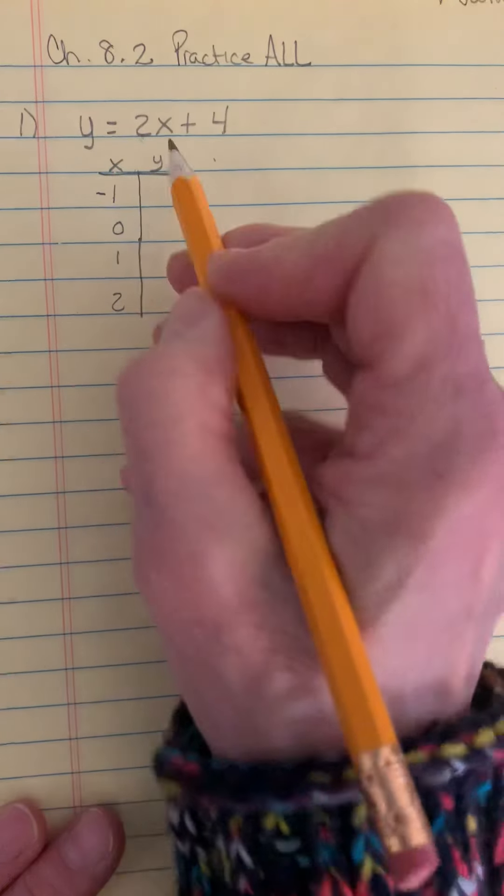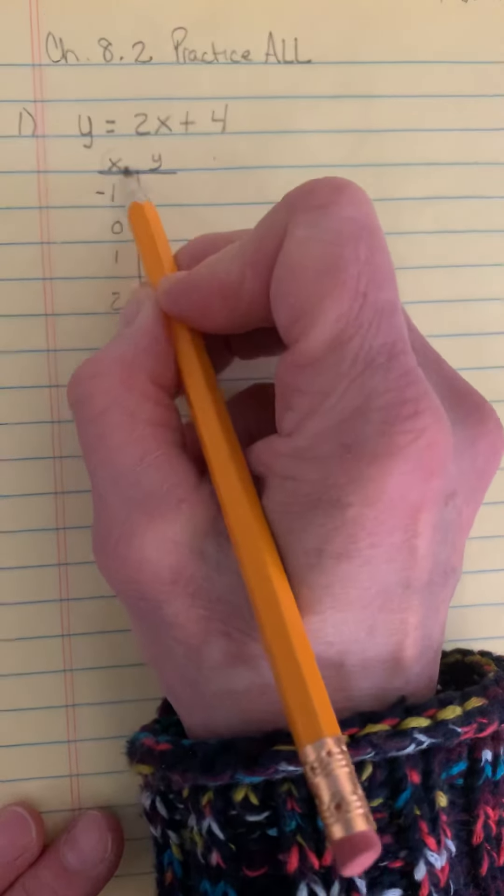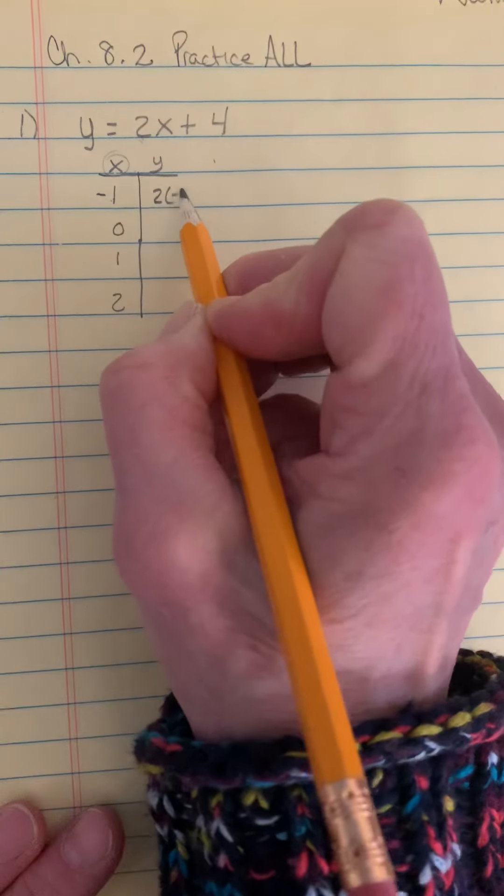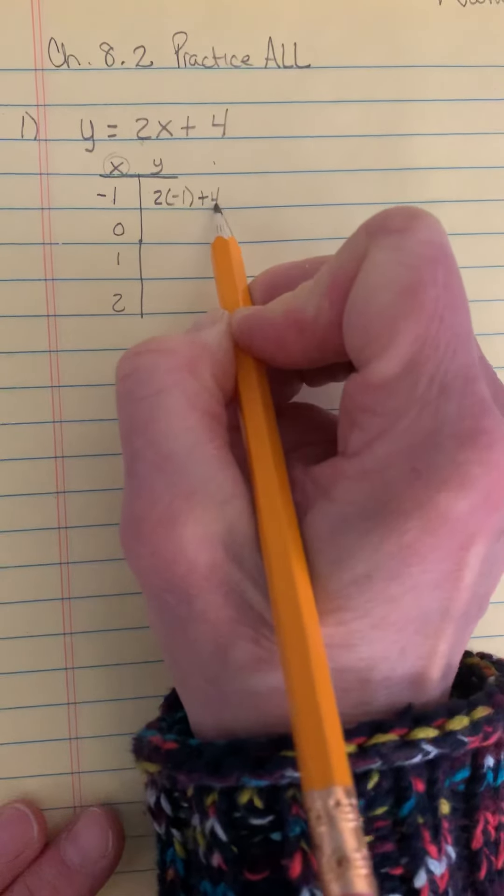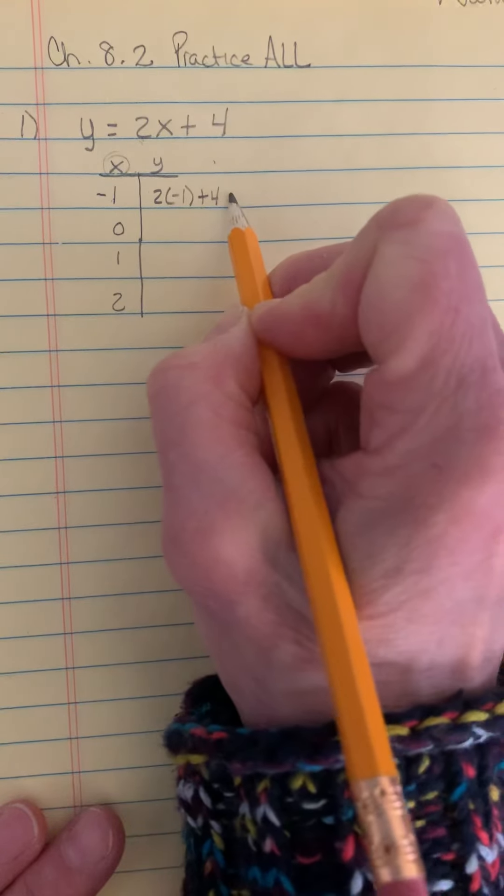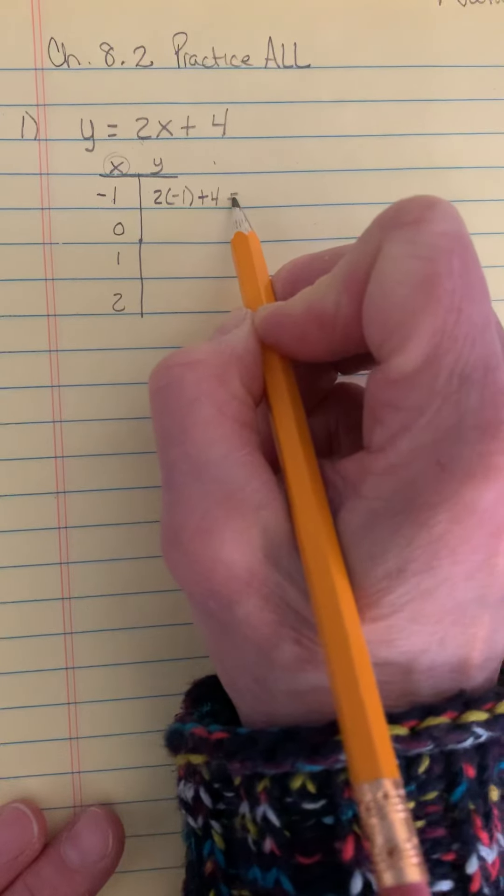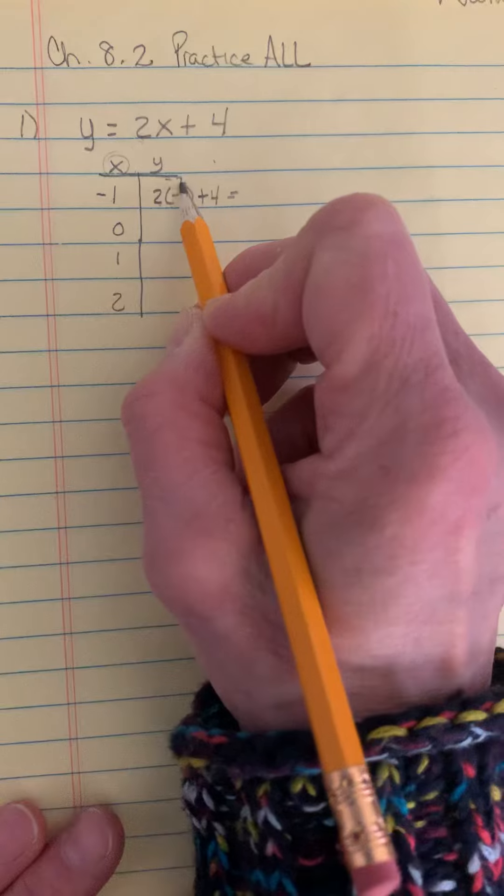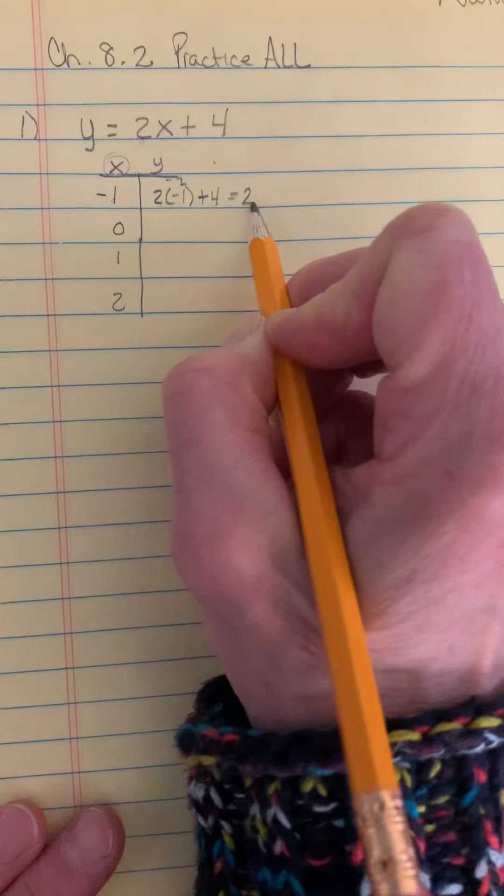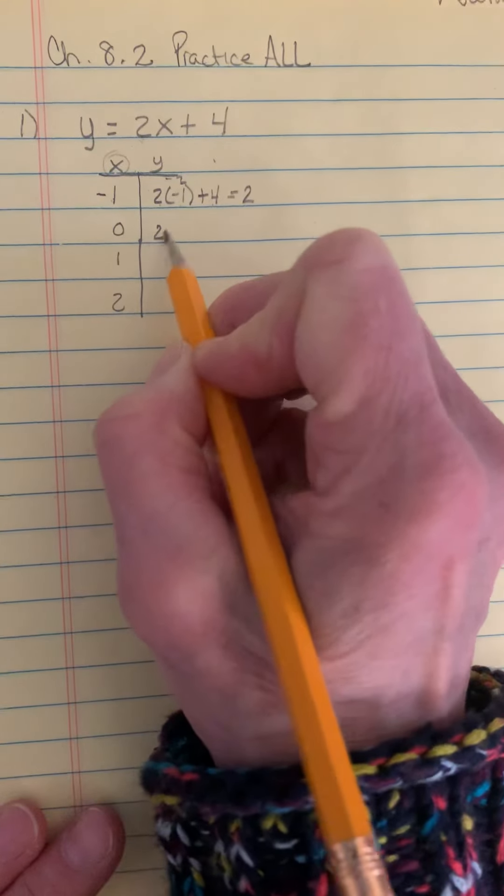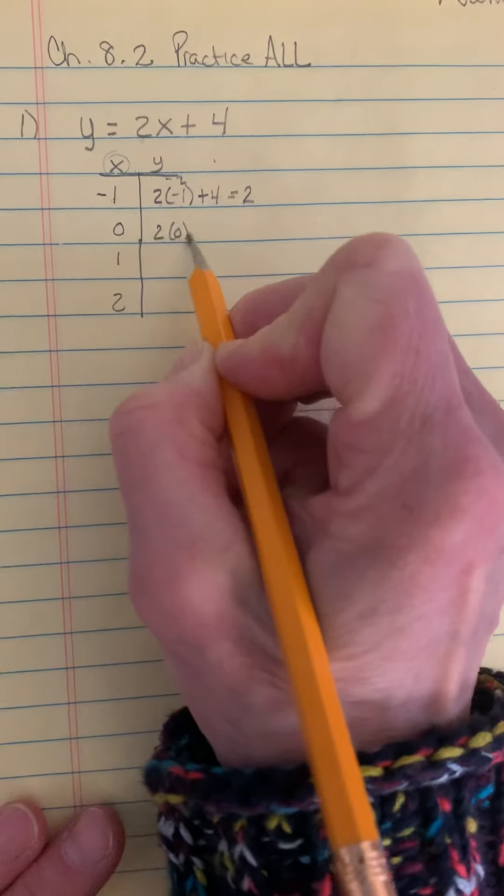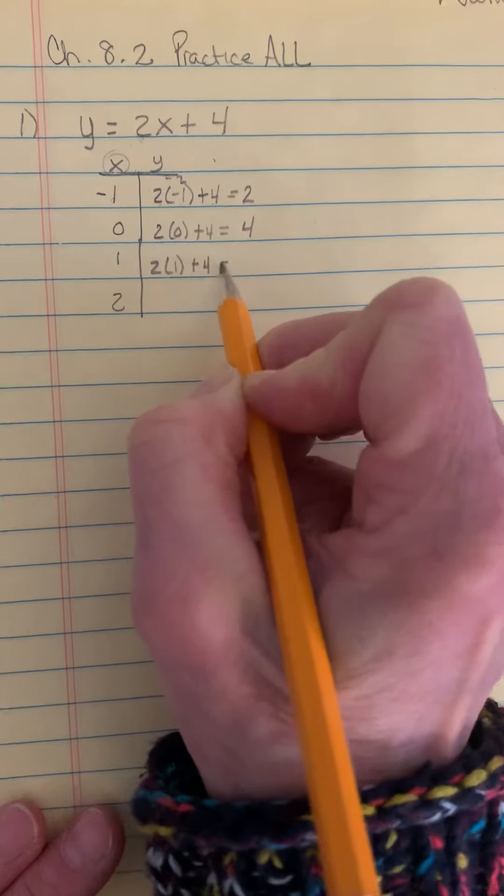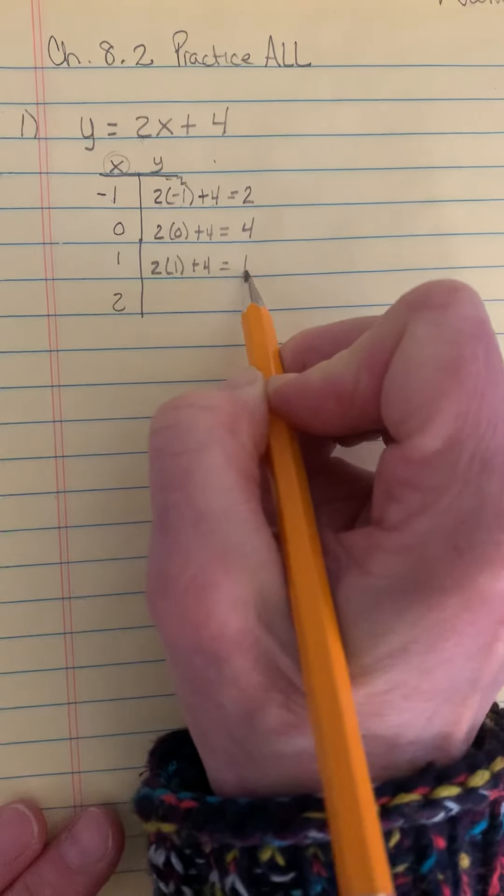And now all I have to do is take that negative 1 and plug it in for the x value. 2 times negative 1 plus 4 is equal to 2 times negative 1 is negative 2 and negative 2 plus 4 is 2. Then do it again. 2 times 0 plus 4 is equal to 4. 2 times 1 plus 4. What do you think it's going to be? Exactly.